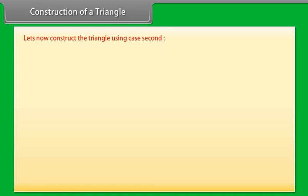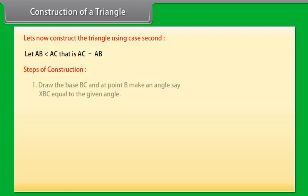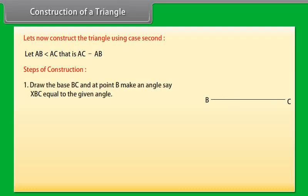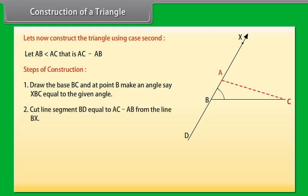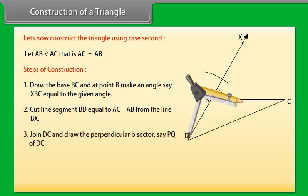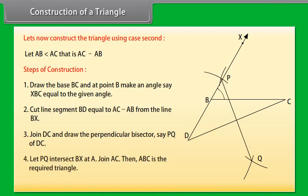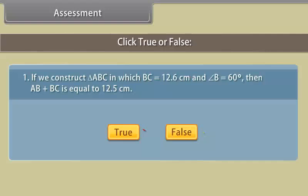For Case 2, let AB be less than AC, that is, AC minus AB is given. Draw the base BC and at point B make an angle XBC equal to the given angle. Cut line segment BD equal to AC minus AB from ray BX. Join DC and draw the perpendicular bisector PQ of DC. Let PQ intersect BX at A. Join AC. Then ABC is the required triangle.